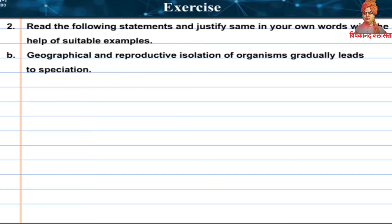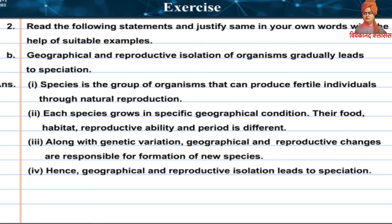Statement B: Geographical and reproductive isolation of organisms gradually leads to speciation. Answer: Species is the group of organisms that can produce fertile individuals through natural reproduction. Each species grows in specific geographical conditions with different food, habitat, reproductive ability and period. Along with genetic variation, geographical and reproductive changes are responsible for formation of new species. Hence, geographical and reproductive isolation leads to speciation.